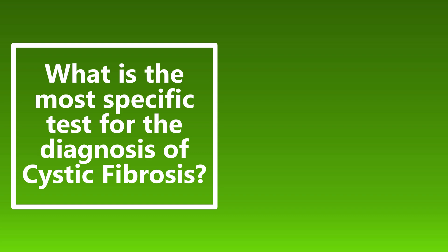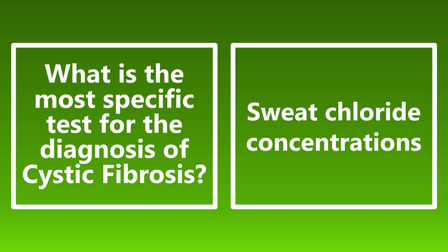What is the most specific test for the diagnosis of cystic fibrosis? This is going to be sweat chloride concentrations. This is testable on USMLE Step 1 and comes back around for Step 2 CK and Step 3. The most specific test for cystic fibrosis is sweat chloride concentrations, typically greater than 60 mEq per liter. The number is not as important, but know that's the most specific test.